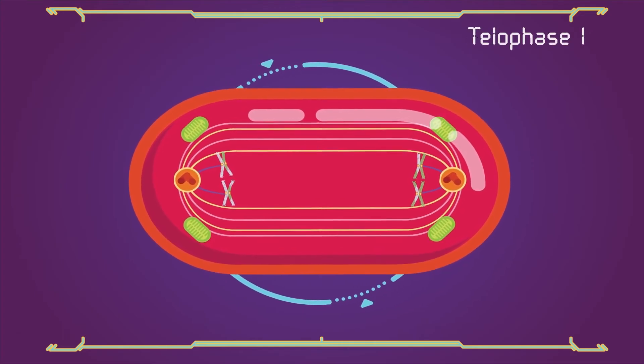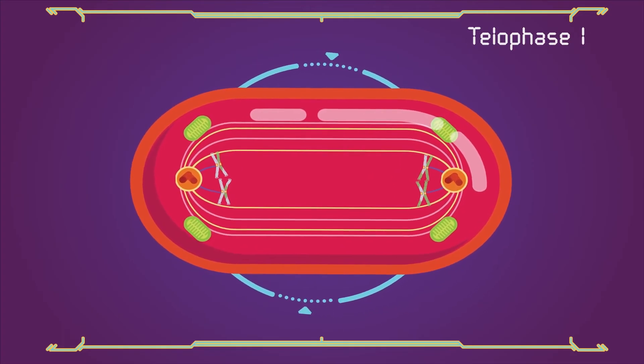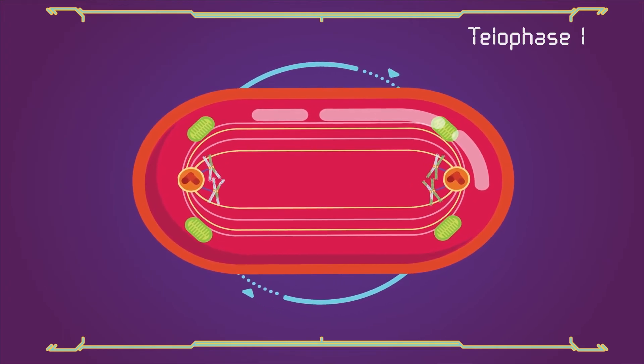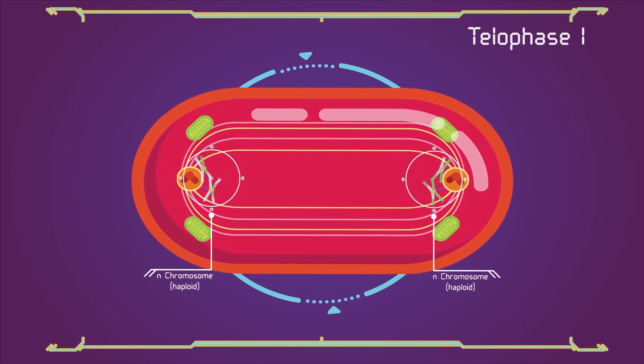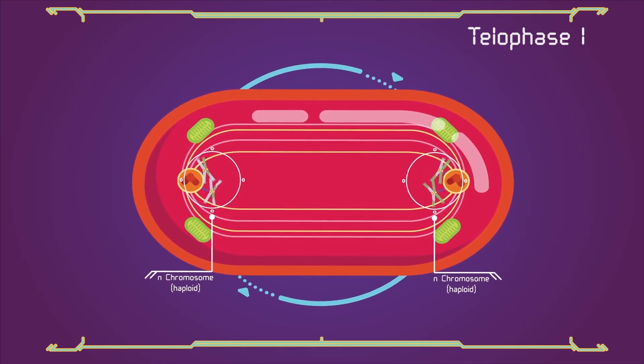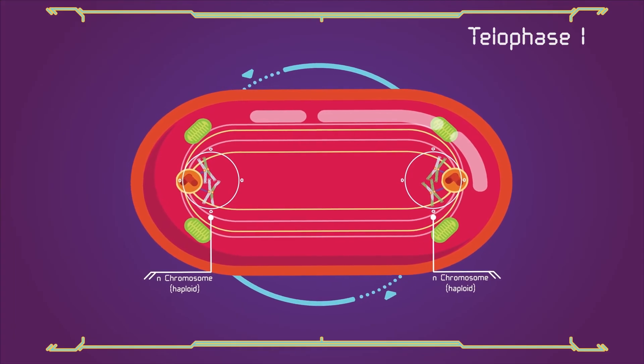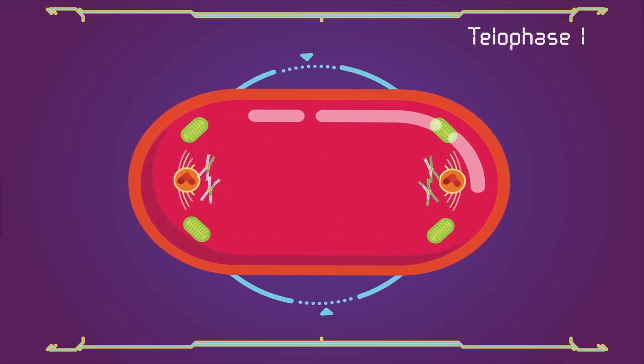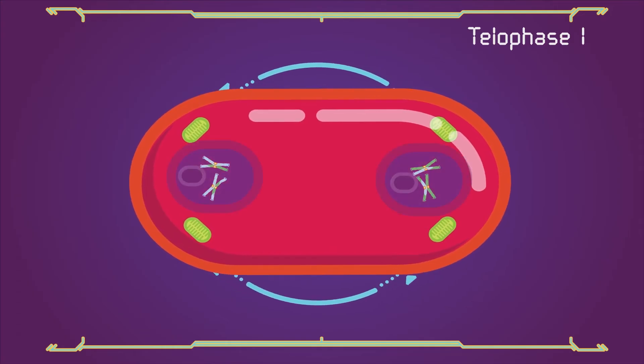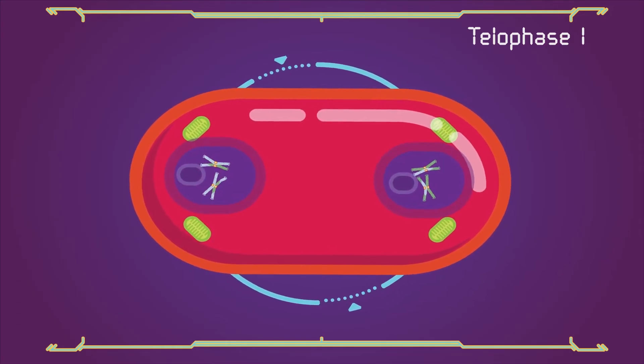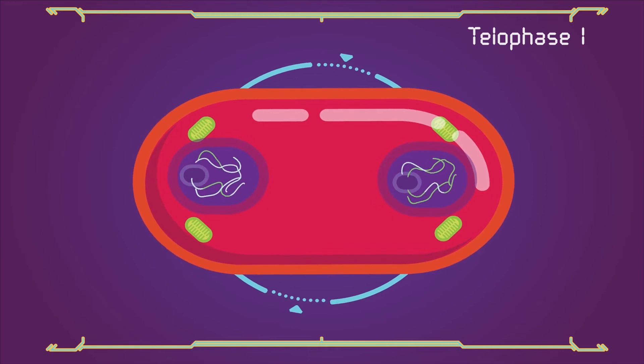Telophase 1. The first meiotic division effectively ends when the chromosomes arrive at the poles. Each daughter cell now has half the number of chromosomes, but each chromosome consists of a pair of chromatids. The microtubules that make up the spindle network disappear, and a new nuclear membrane surrounds each haploid set. The chromosomes uncoil back into chromatin.